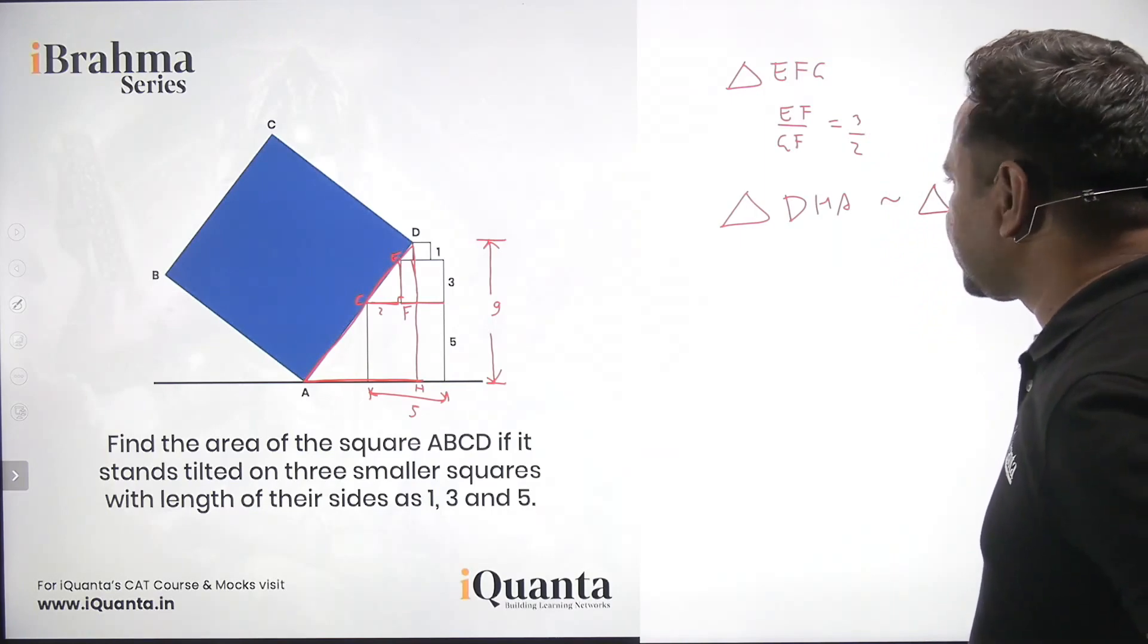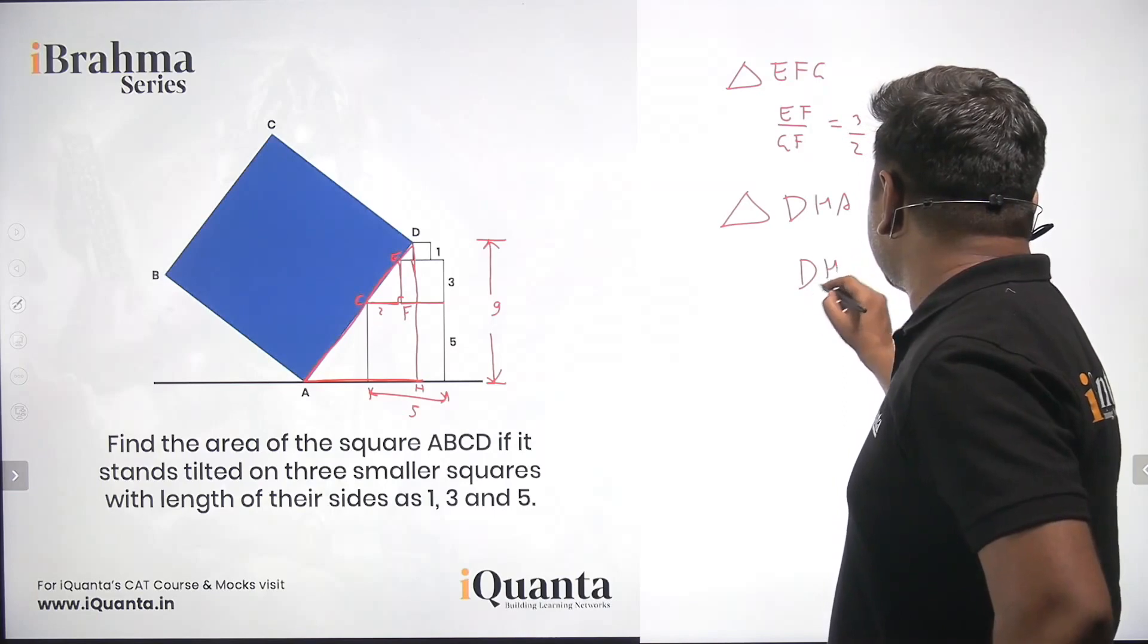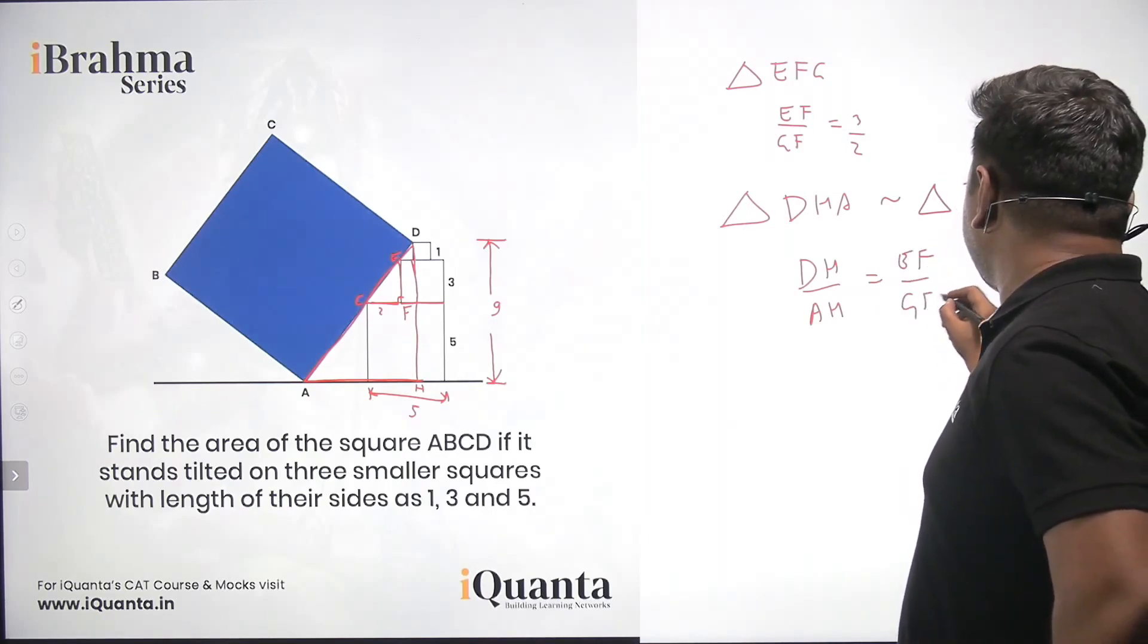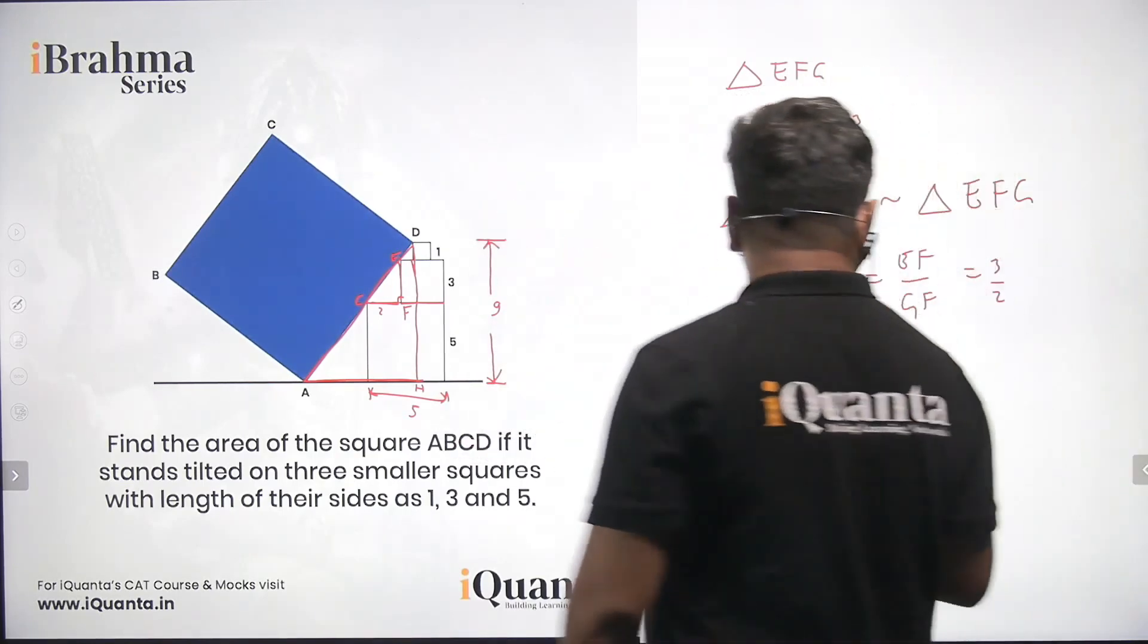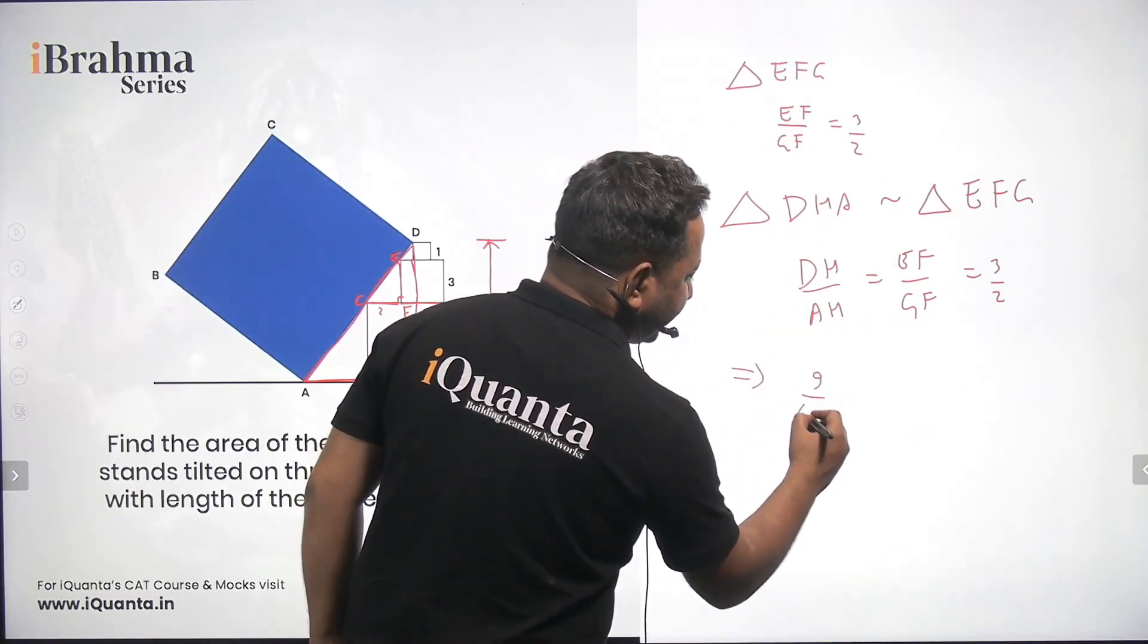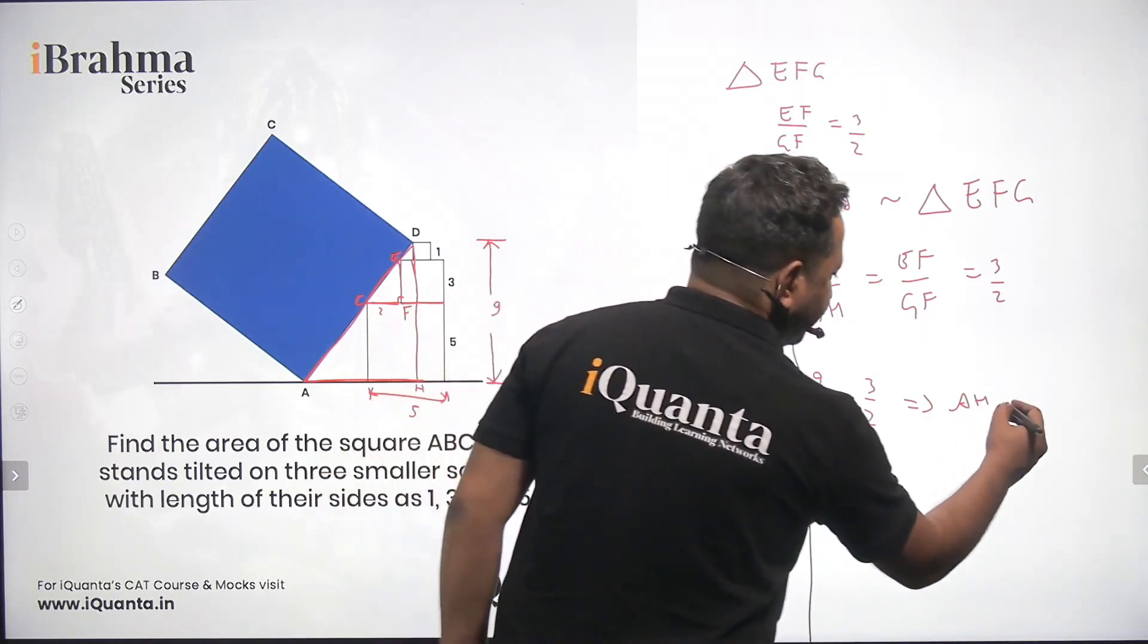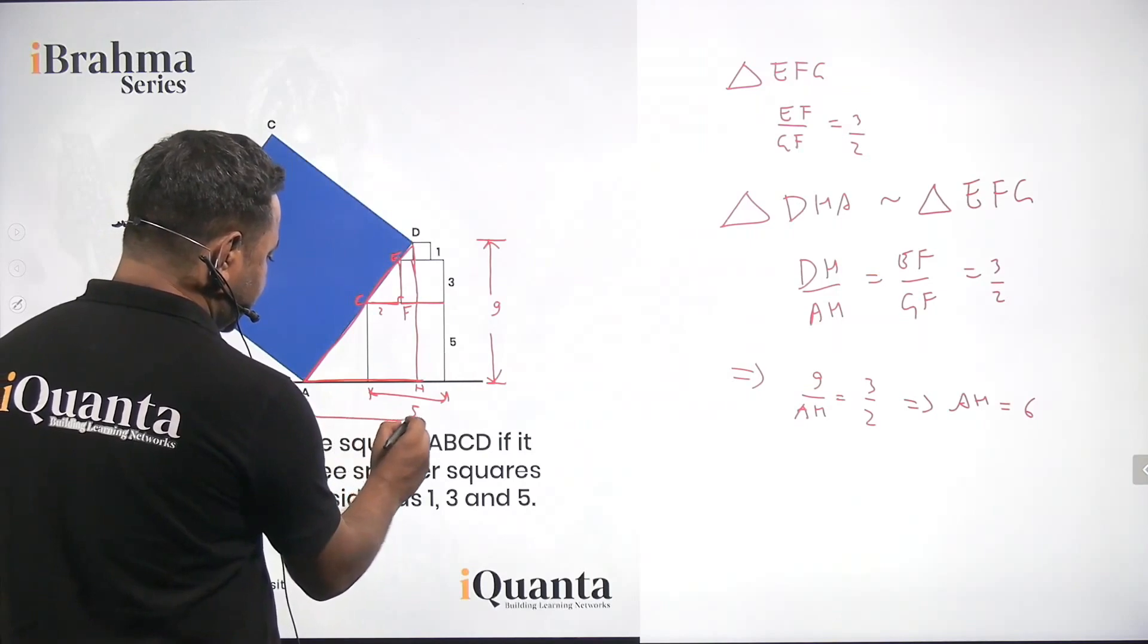Now once we have established this, we can say that DH upon AH will be equal to EF upon GF, or we can say equal to 3 by 2. The value of DH is known to us is 9. So we can calculate the value of AH. Replacing DH by 9, we have 9 upon AH as 3 by 2, which further means that the value of AH will be 6. This AH is 6.